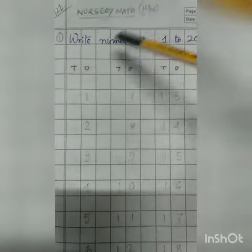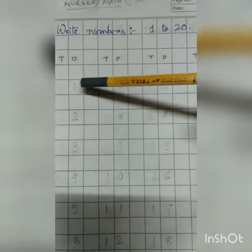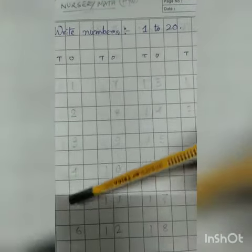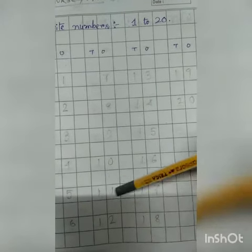So, in this way you have to write 1 to 20. Let us count again: 1, 2, 3, 4, 5, 6, 7, 8, 9 — then 1, 0 — ten.